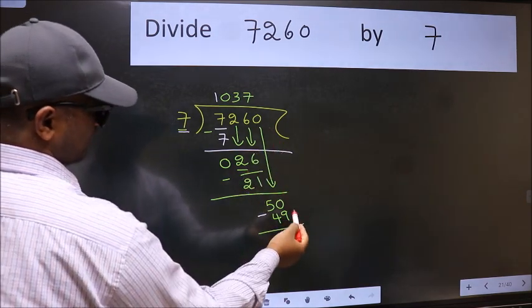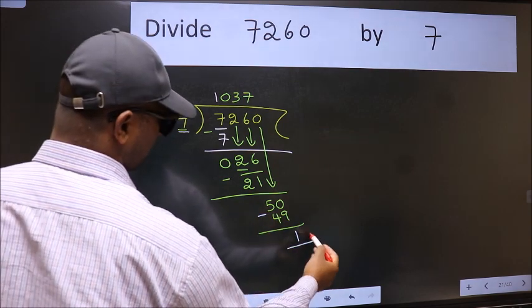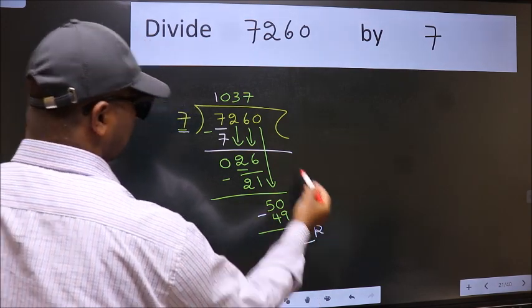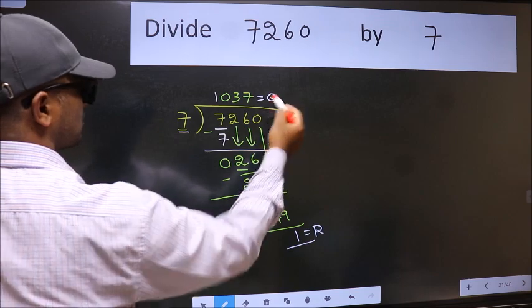No more numbers to bring down. So we stop here. This is our remainder and this is our quotient.